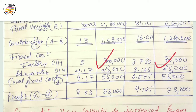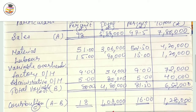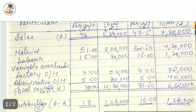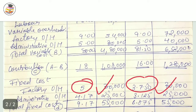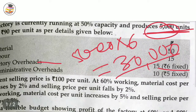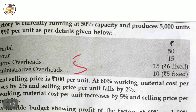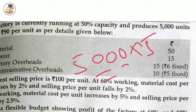Total fixed cost: contribution minus total fixed cost gives your profit. So at 60% capacity profit is 50,000 and at 80% capacity profit is 73,000. When capacity increases from 60% to 80%, profit increases from 50,000 to 73,000.